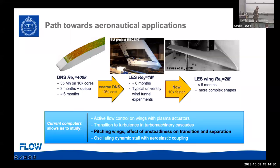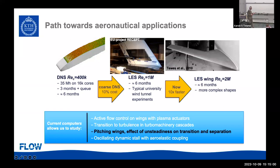What type of things do we want to study? We have been doing active flow control and wings with plasma generators, transition to turbulence in turbine machinery cascades at Reynolds numbers around 500,000, and over the last few years, pitching wings to look at the effect of unsteadiness on transition and separation. What I'm going to talk about today is not millions of Reynolds numbers but hundreds of thousands. In the future, we're thinking about oscillating dynamic stall and coupling with aeroelasticity.